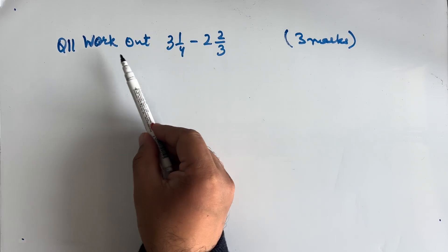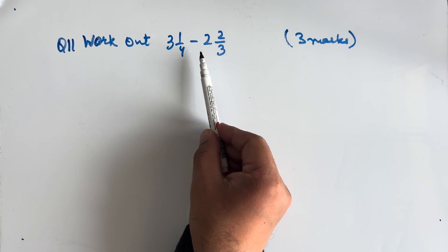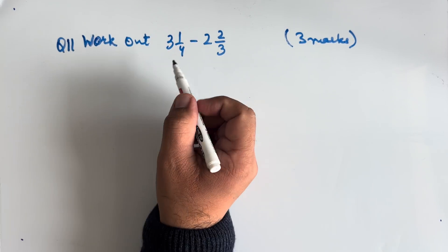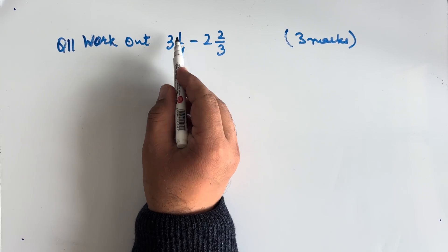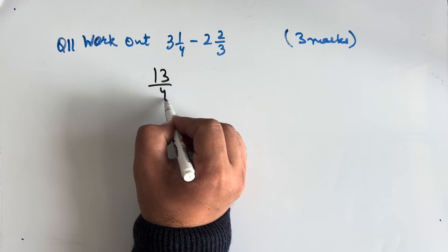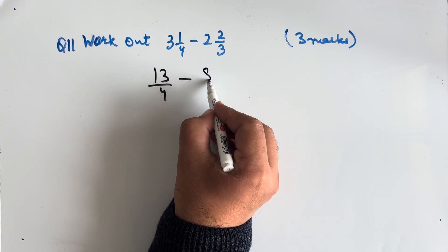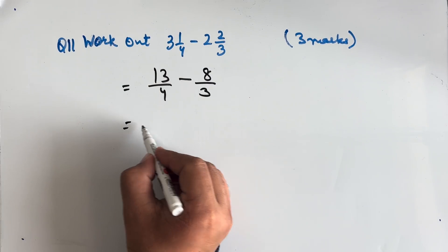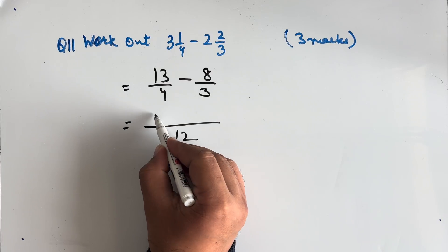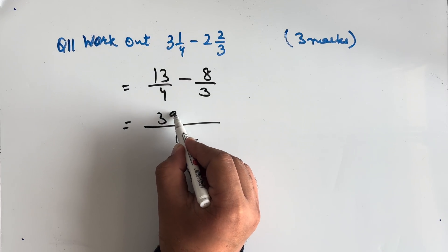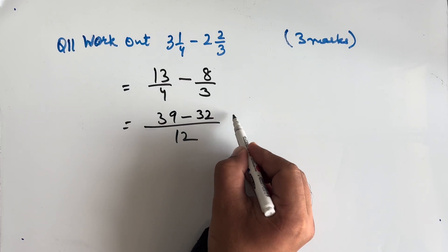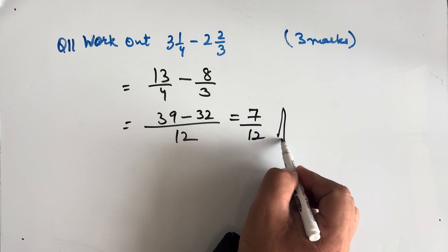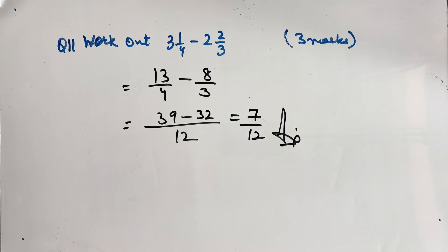Question 11: Work out 3 and 1/4 minus 2 and 2/3. 3 and 1/4 becomes 13/4 and 2 and 2/3 becomes 8/3. Taking LCM of 12: 39 minus 32 = 7/12. This is our final answer.